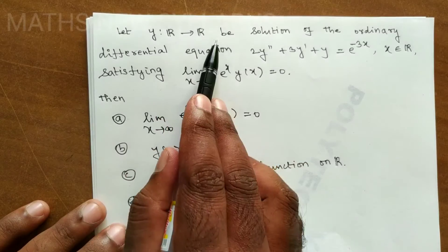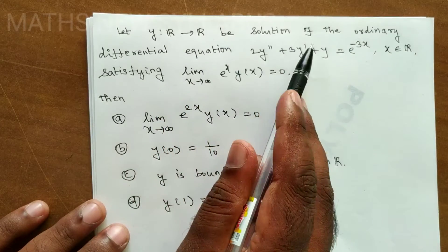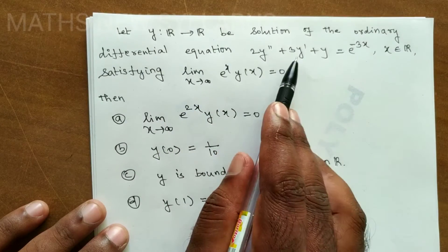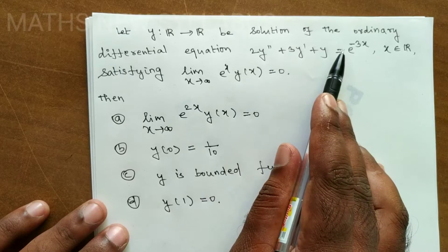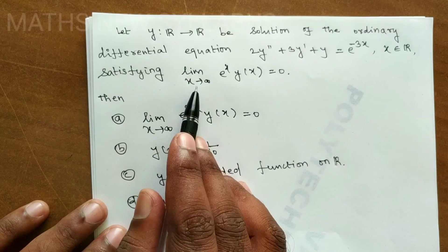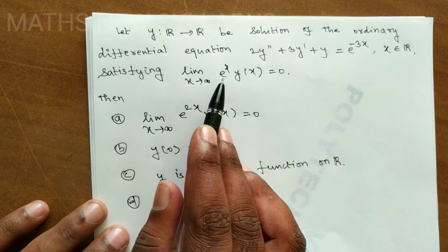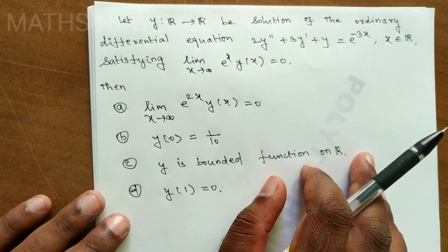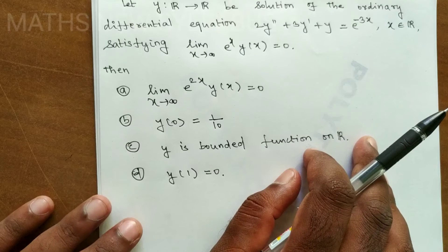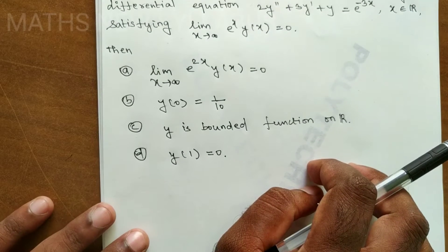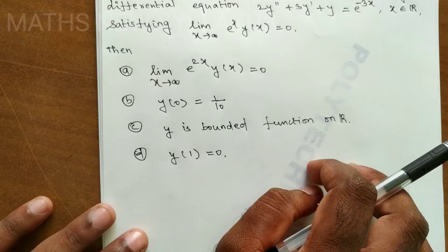Let y be a function from R to R, a solution of the ordinary differential equation: 2y'' + 3y' + y = e^(-3x) for all x in R, satisfying the condition that the limit as x tends to infinity of e^x · y(x) equals 0. Options: (a) limit x→∞ of e^(2x)·y(x) = 0, (b) y(0) = 1/10, (c) y is a bounded function on R, (d) y(1) = 0.